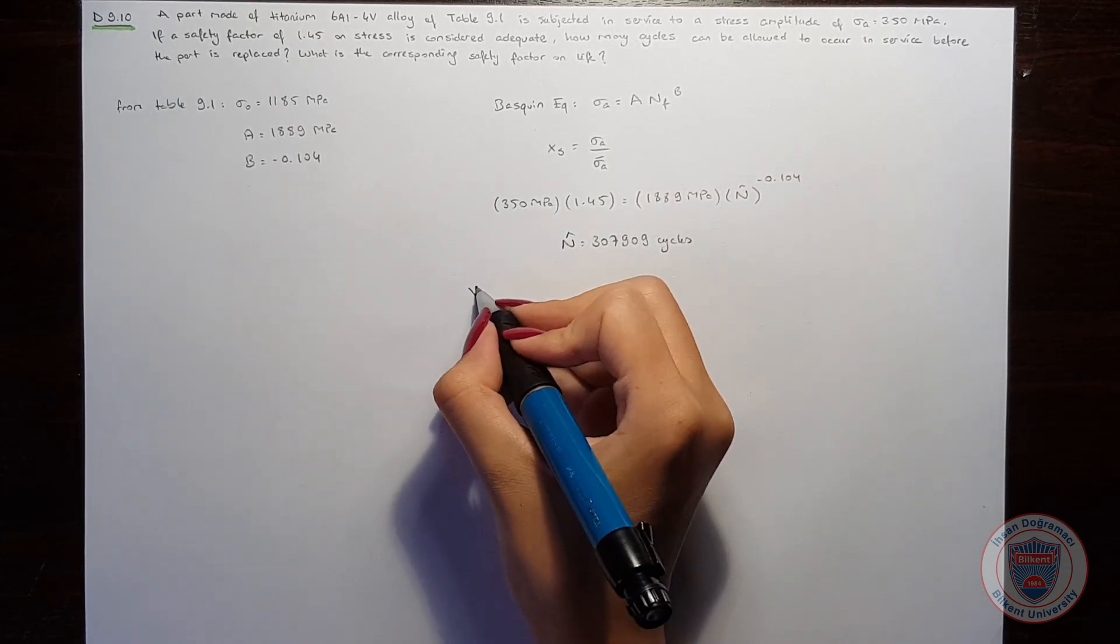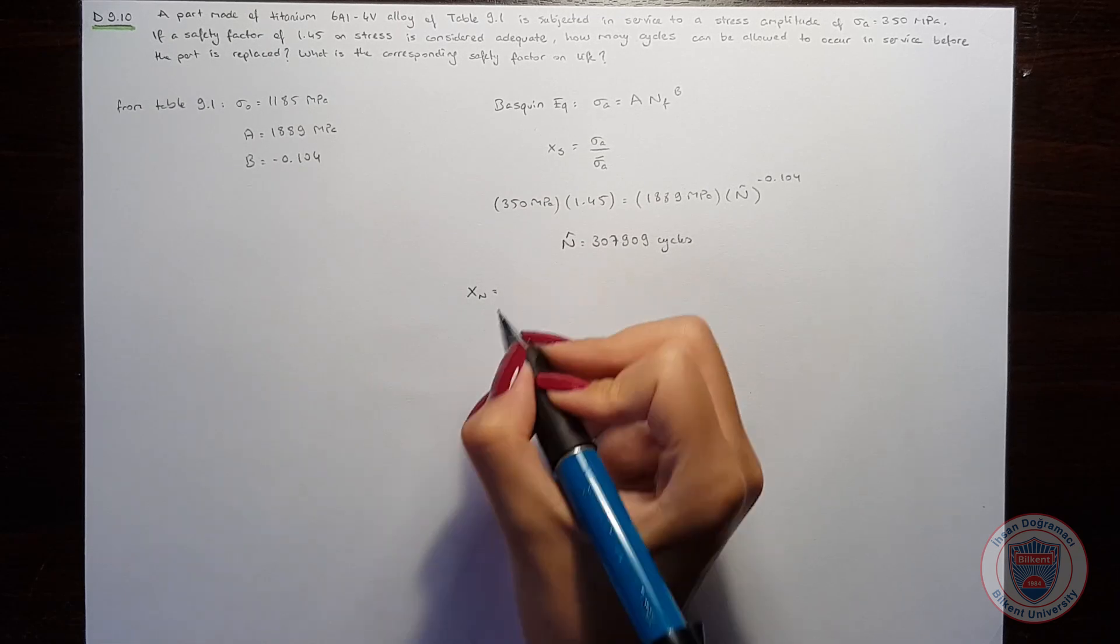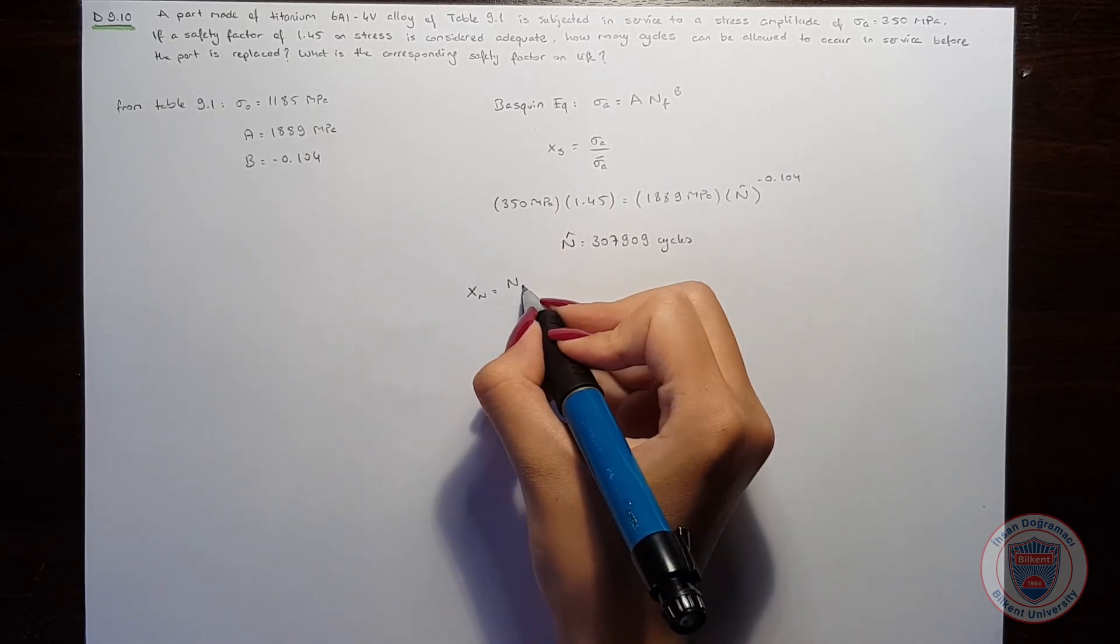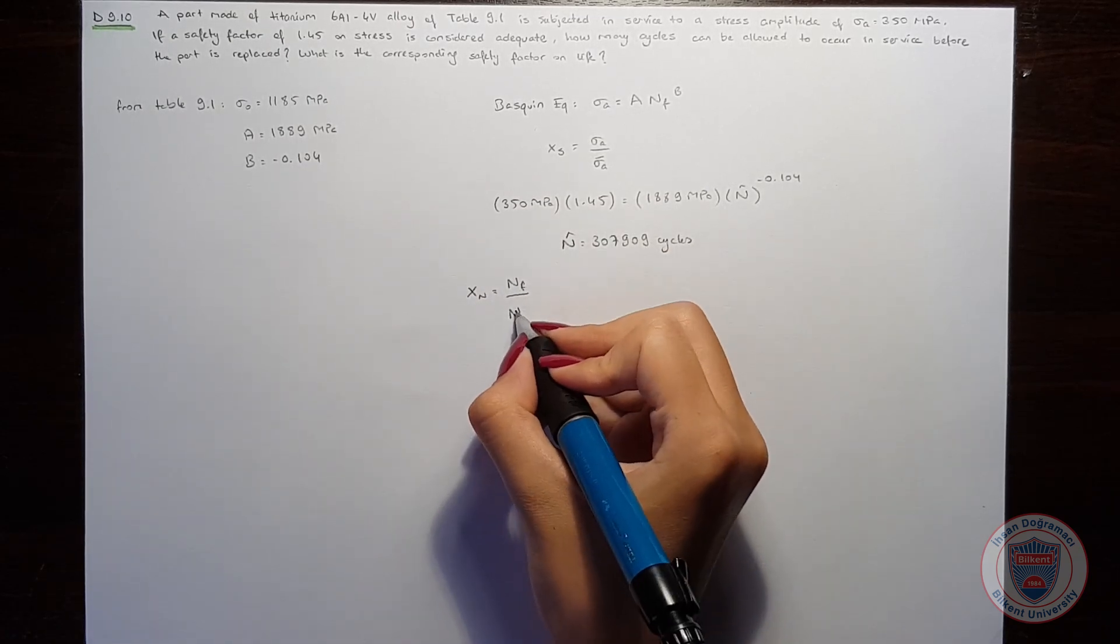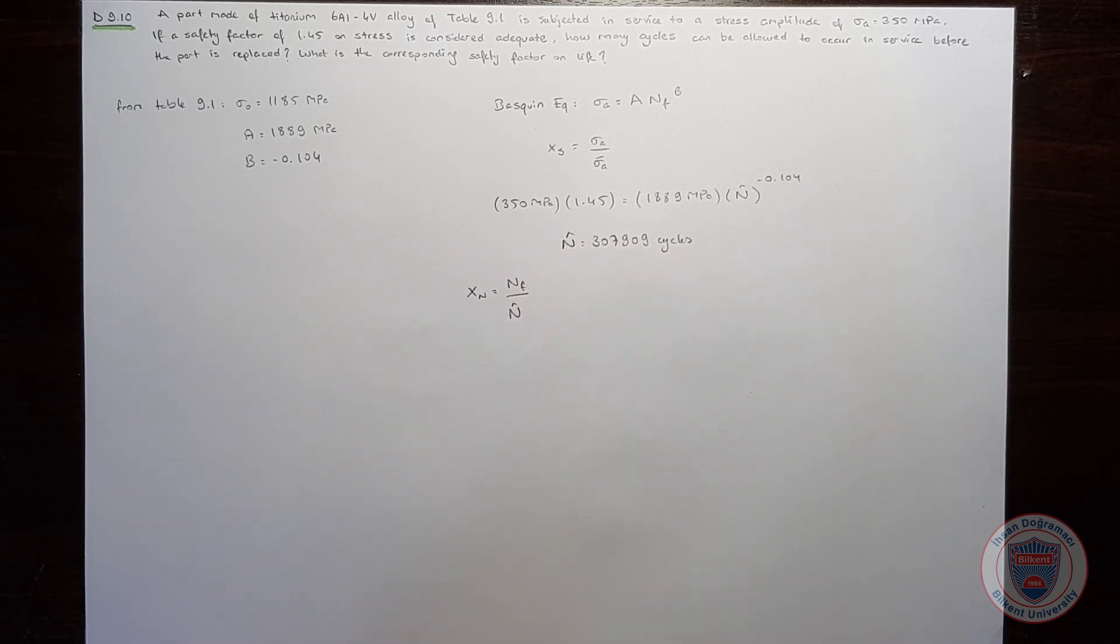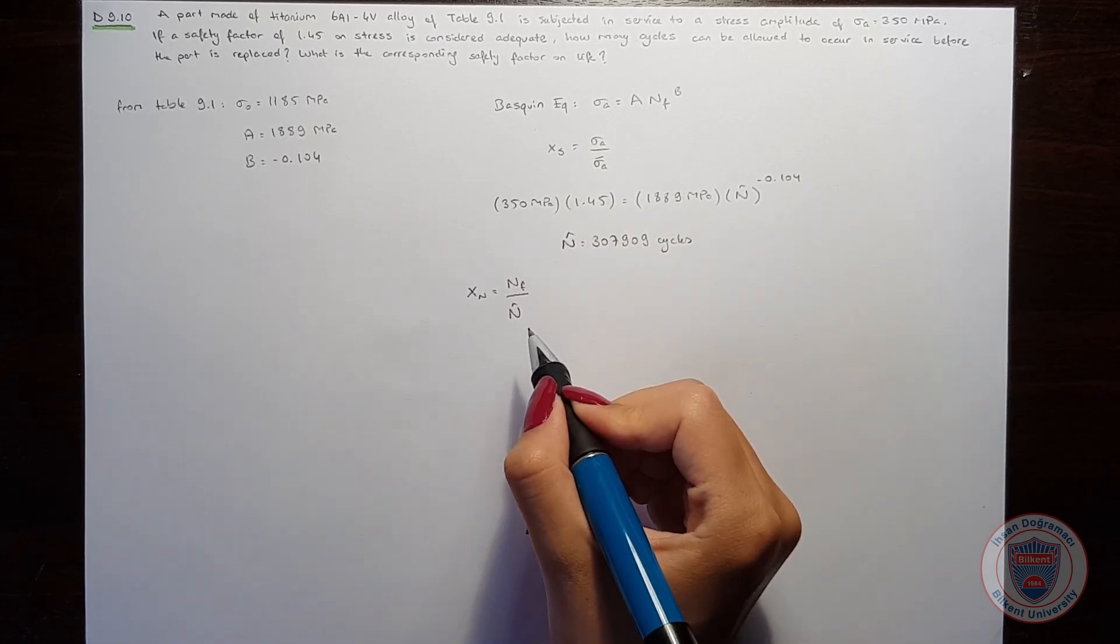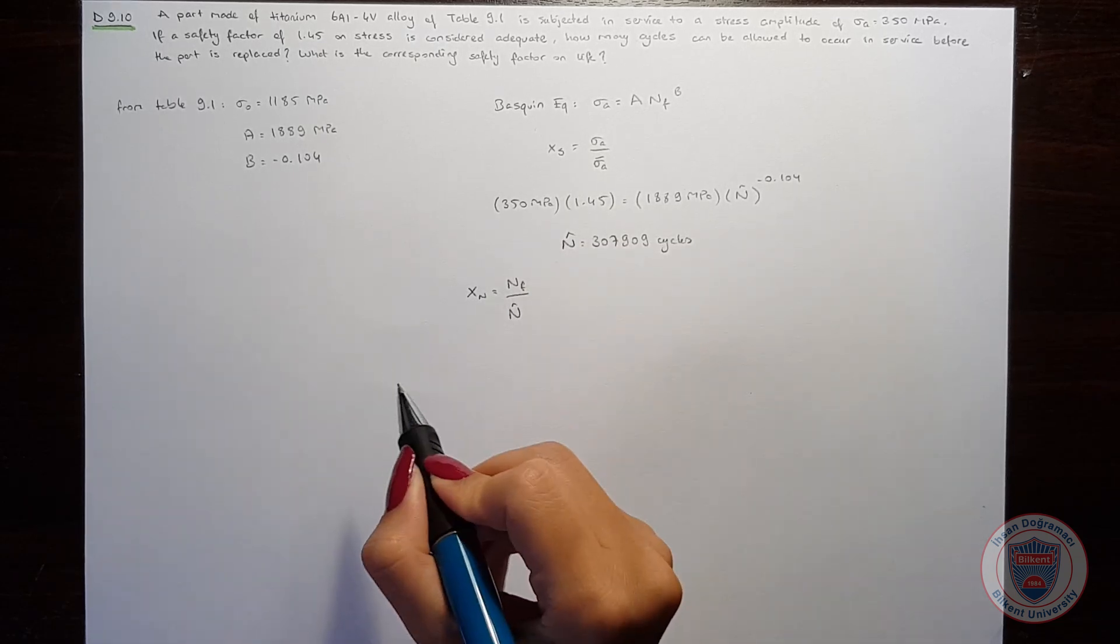We know that the safety factor on life is equal to nf over n bar. We know n bar, but we should calculate nf first.